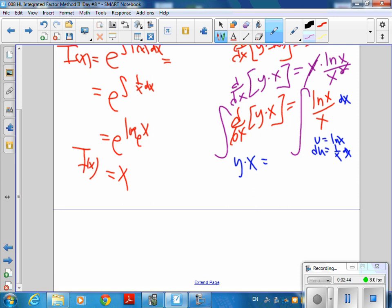So this really turns into u du. What's the antiderivative of u du? u squared over 2 plus c.